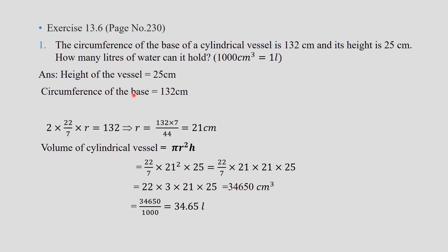For a cylinder, the base is circle in shape, so the circumference of a circle is 2 pi r. Substituting, 2 pi r equals 132 centimeters. To find the radius: 2 into 22/7 into r equals 132. Transposing, r equals 132 into 7 divided by 44. After cancelling, radius equals 21 centimeters.